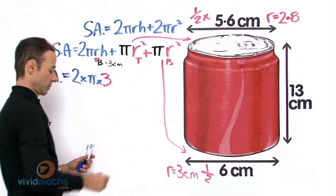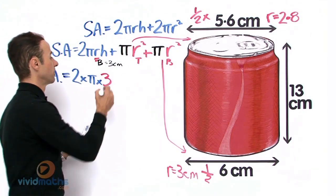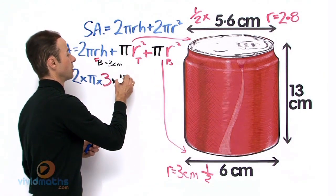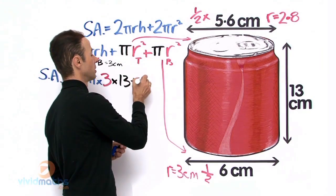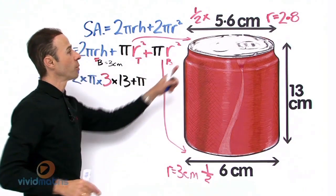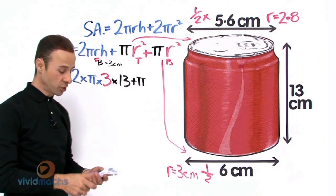That is going to be 3 times the height, which is 13, plus we got πr² there, and that is the top, and the top one there is 2.8, that is the radius for the top again.